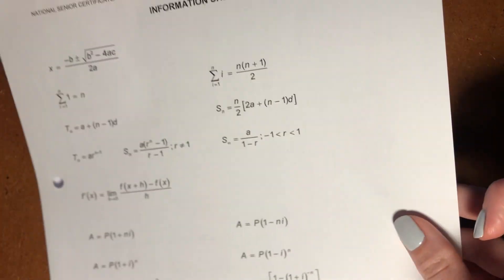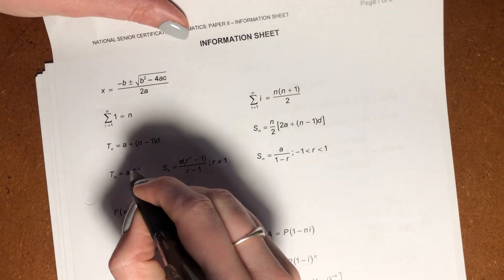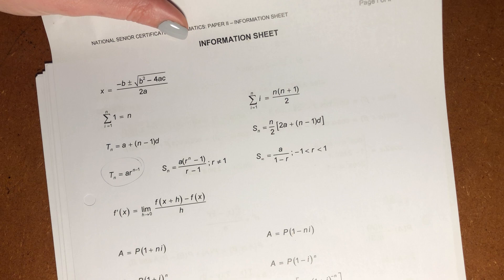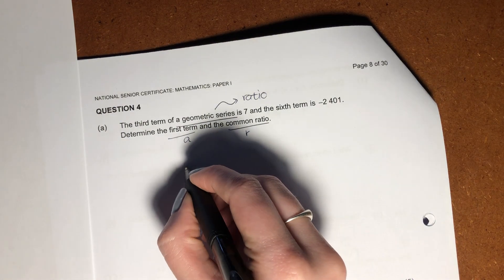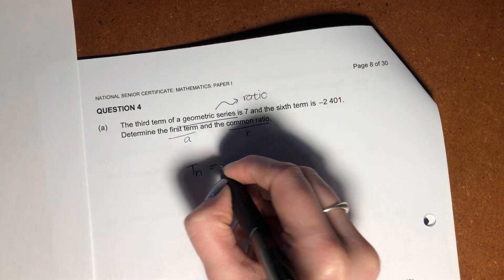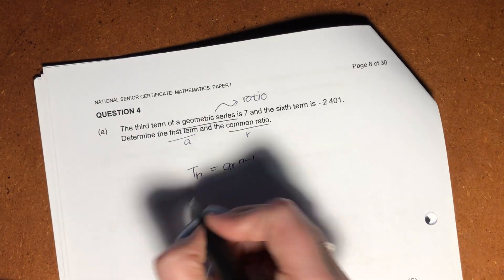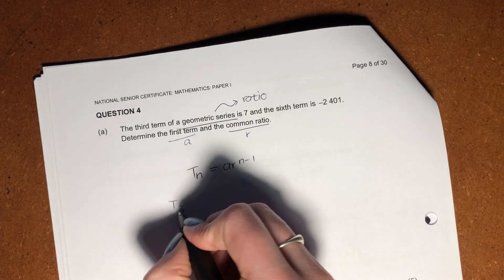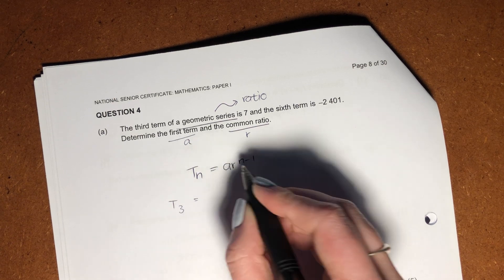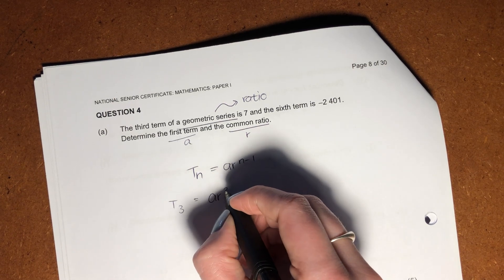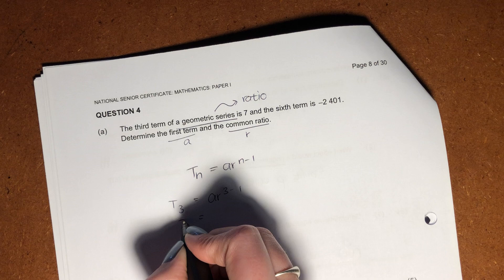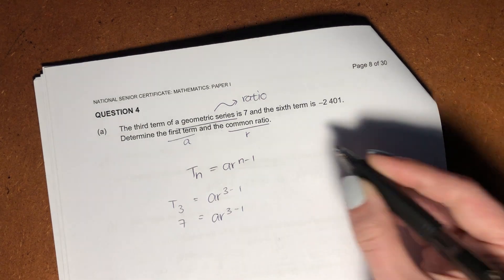Firstly, go to your formula sheet and find the formula for a geometric series and write it over here. So it would be TN equals AR^(N-1). Okay, so now we know that my third term equals AR to the 3 minus 1, and we know that that equals 7.